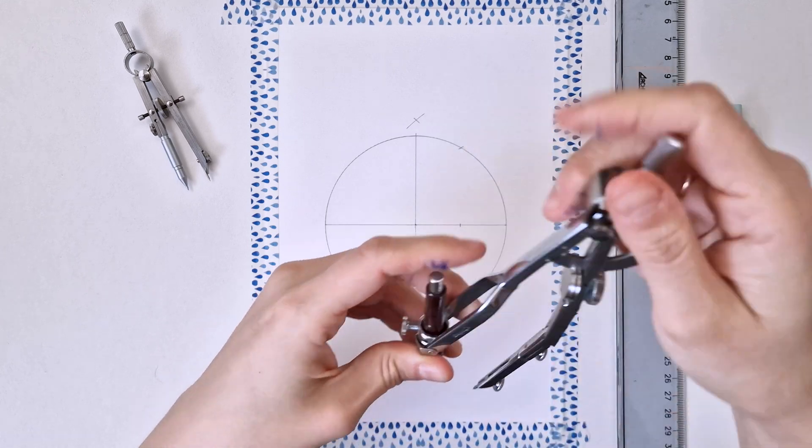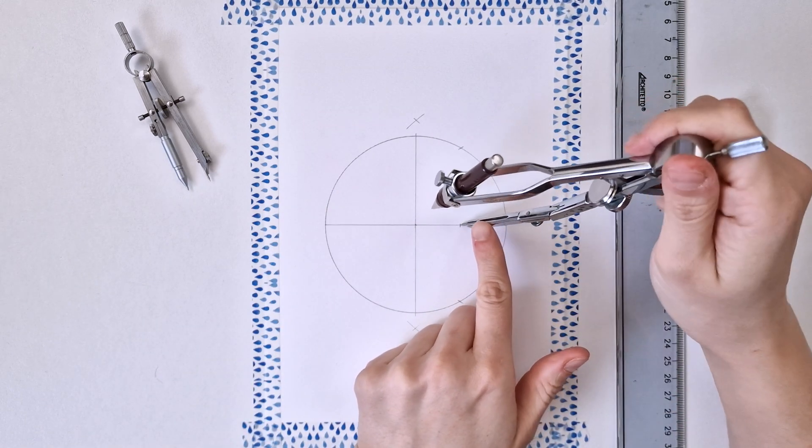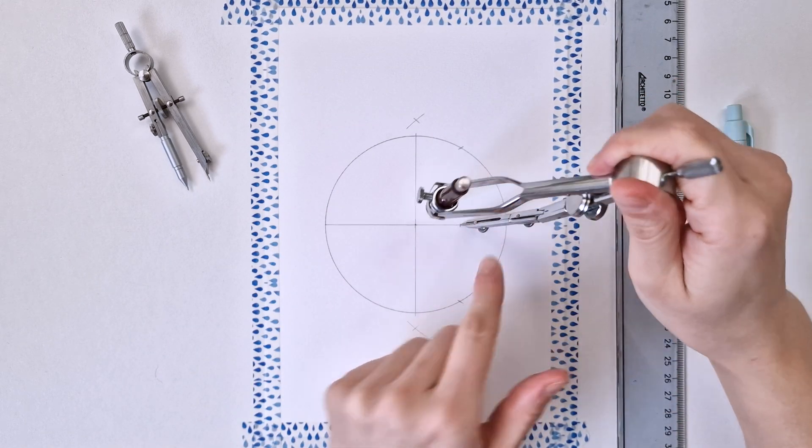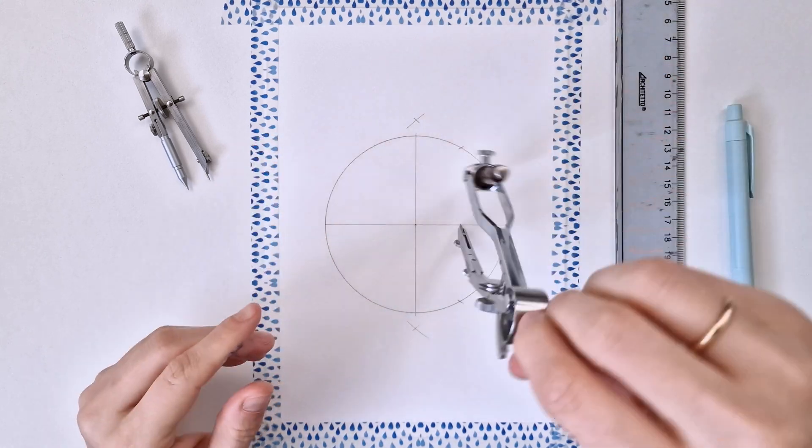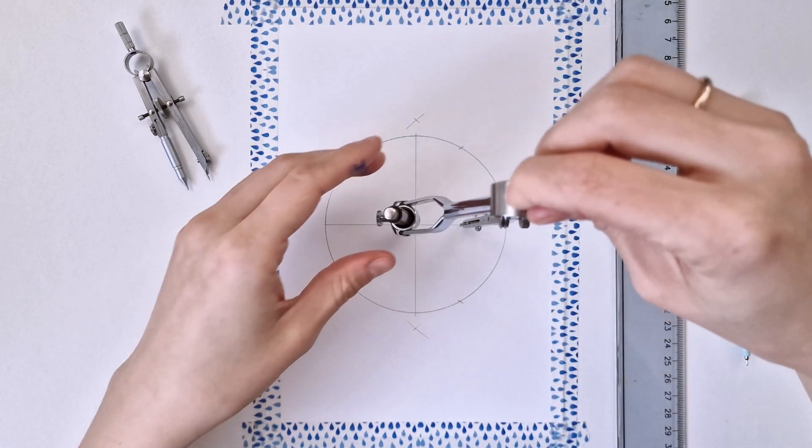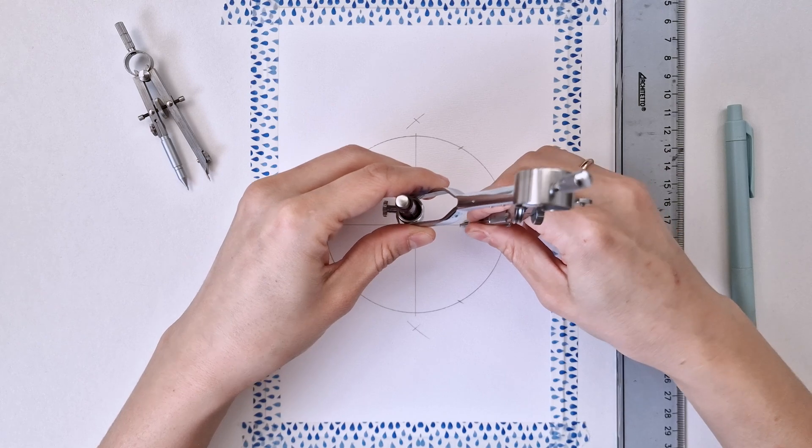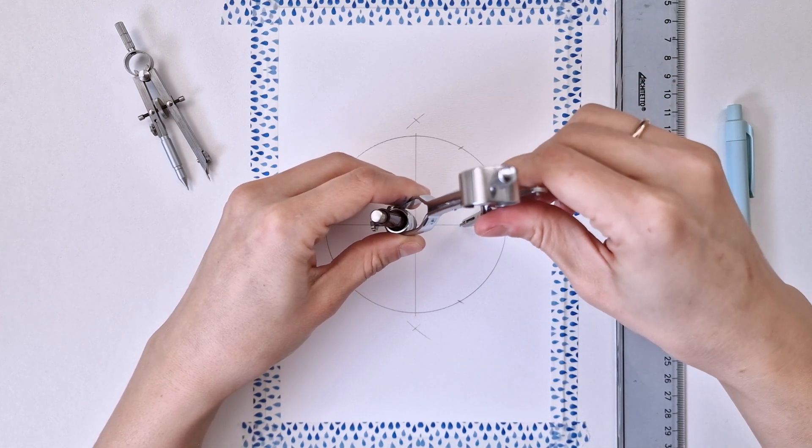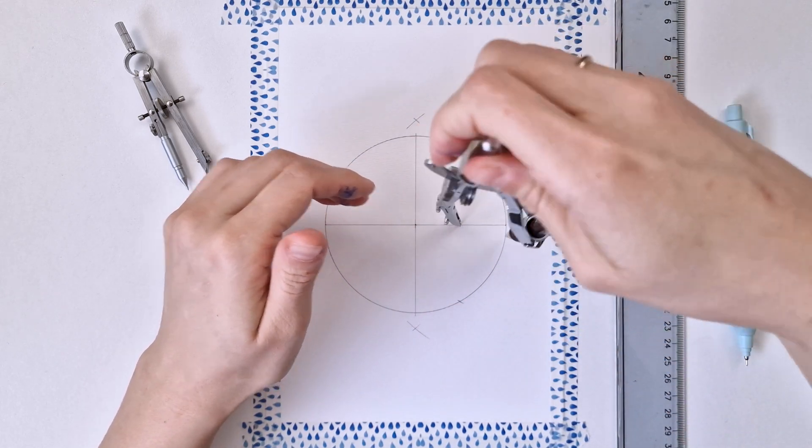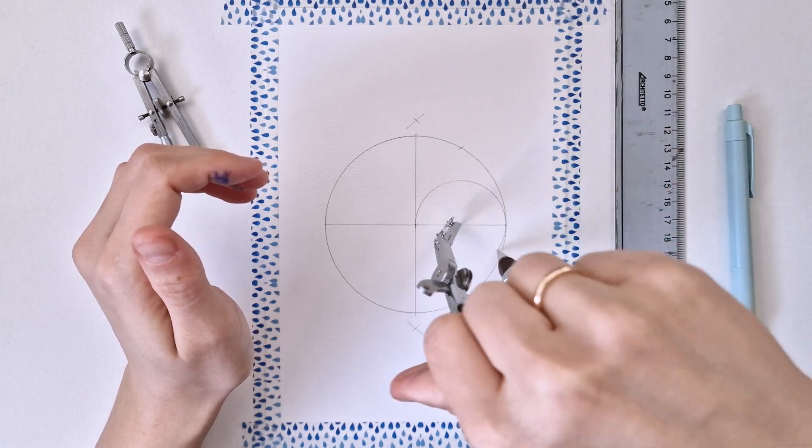So I'm opening my compass, pointing into this intersection and open it to the center of the big circle. Just make sure, double check both intersections, both the one on the left and on the right, so make sure that you're drawing a perfect circle.